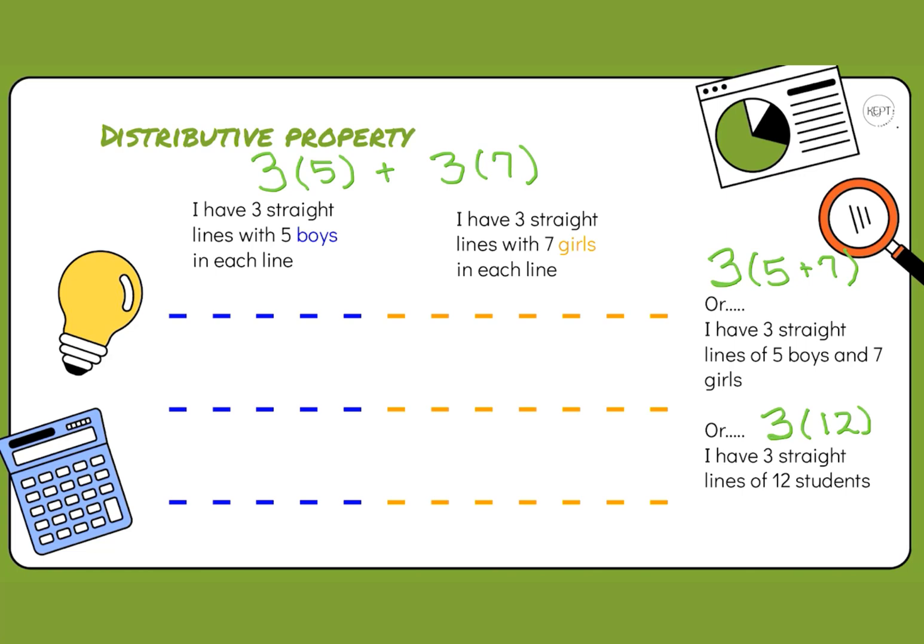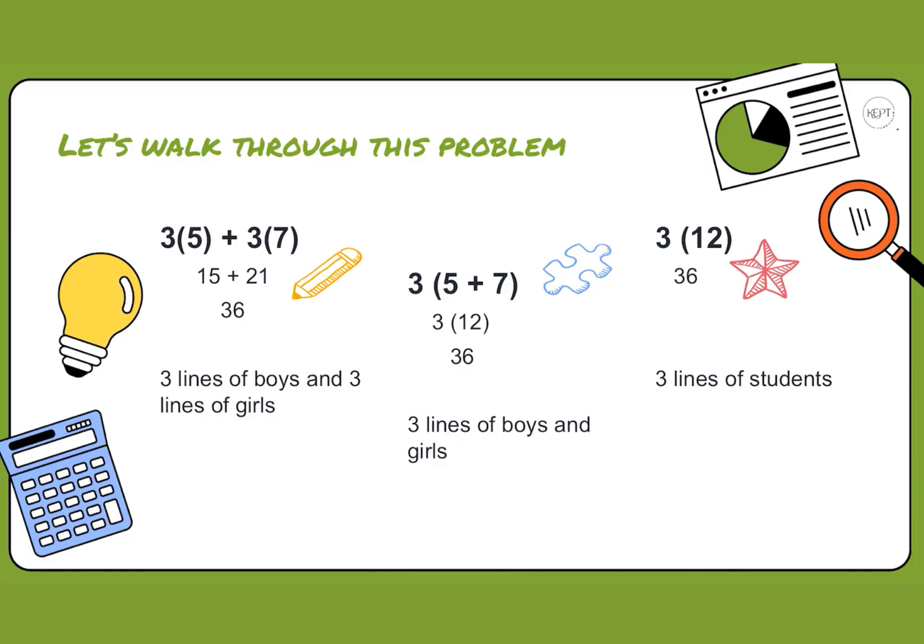Now all of these ways say the exact same thing, but they're just different ways of expressing exactly what we're working with. Let's walk through this problem. When we talk about three straight lines of boys and three straight lines of girls, we have 3 times 5, which is the number of boys, giving us a value of 15.